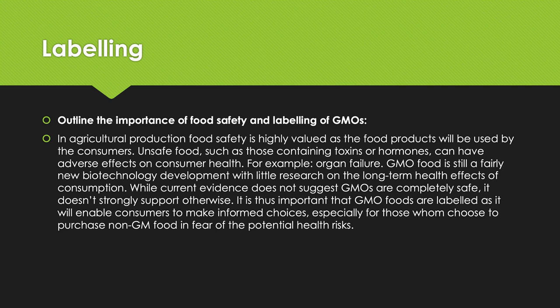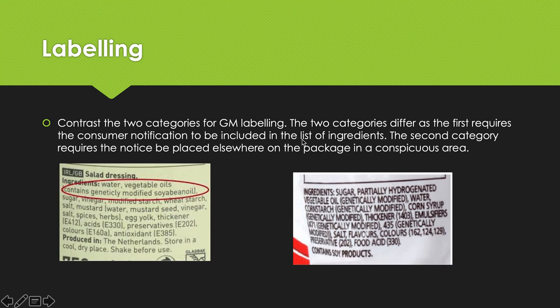We talked about this at length in class. Contrasting the two categories of GMO labelling could be a question you're given. The two categories differ in that the first requires consumer notification to be included in the list of ingredients, and the second category requires the notice to be placed elsewhere on the package in a conspicuous area — usually on the front or somewhere more visible than just the ingredients section. So there are two places: somewhere conspicuous, meaning easy to see, and it must say 'genetically modified.'